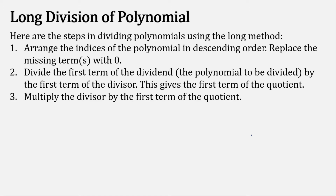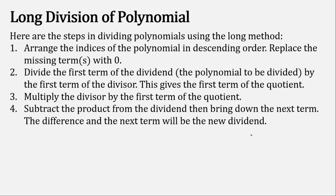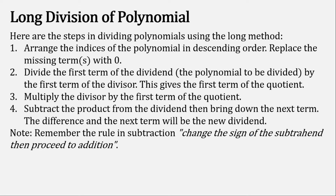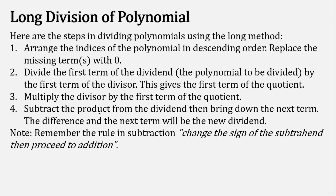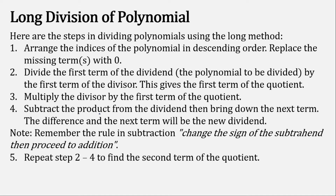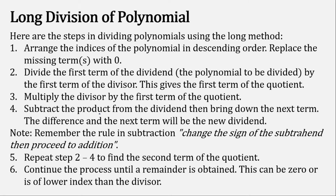Then multiply the divisor by the first term of the quotient, subtract the product from the dividend, and bring down the next term. The difference plus the next term becomes the new dividend. Remember that the rule of subtraction is to change the sign of the subtrahend and then proceed to addition. Repeat steps 2 to 4 until the remainder is obtained — it can be 0 or lower in degree than the divisor.